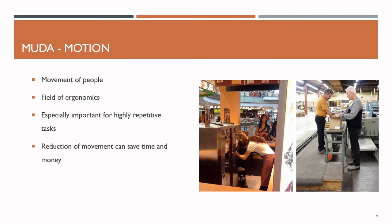The reduction of motion can also lead to a healthier workplace. On the left picture, we see an ice cream machine on which the openings are placed rather low, so the operator always has to bend down into an awkward position. Over months and years, this unhealthy position can lead to injuries. On the right side, we see a far better example where the table has the perfect height for operators to do their packaging work with a healthy posture.